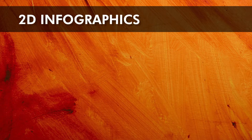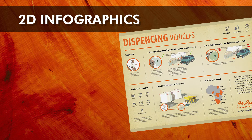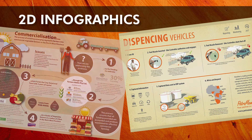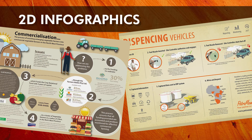2D Infographics. 2D planar design allows you to show a process flow via iconography design elements. The design style is flat and usually describes a process flow or idea without a lot of text.